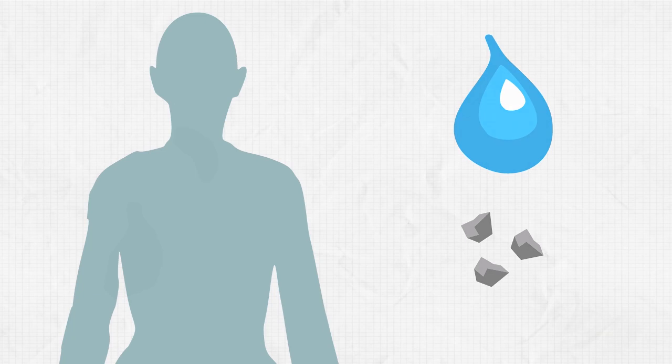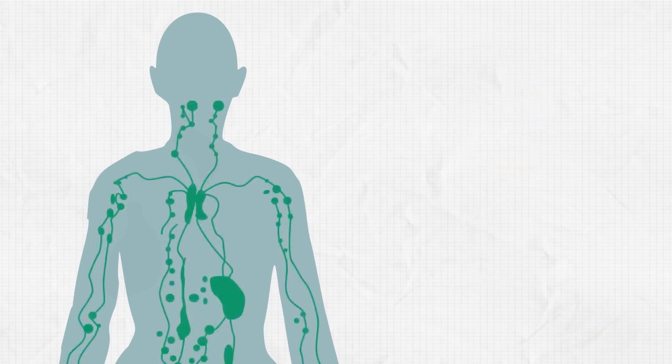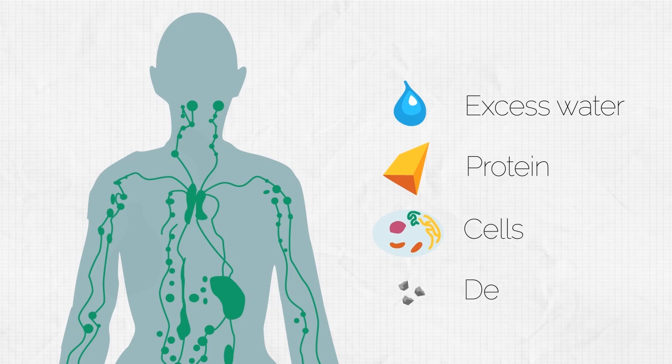It turns out your body has a similar system for dealing with excess water and contaminated substances. There are millions of tiny vessels in your body whose job it is to gather excess water, proteins, cells, and various bits of debris. This is called the lymphatic system.